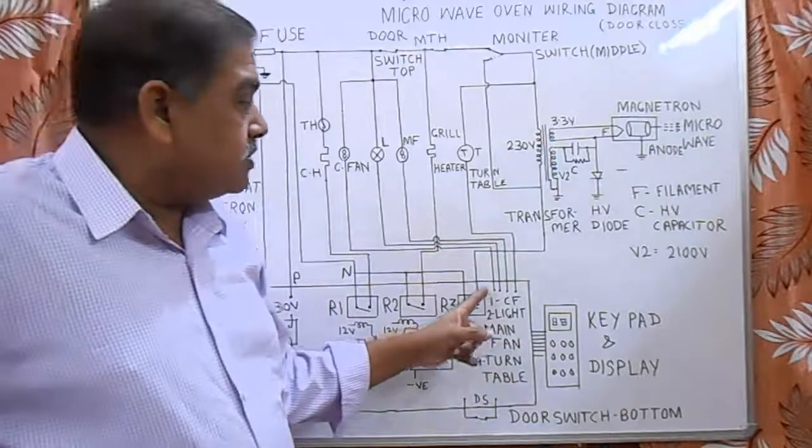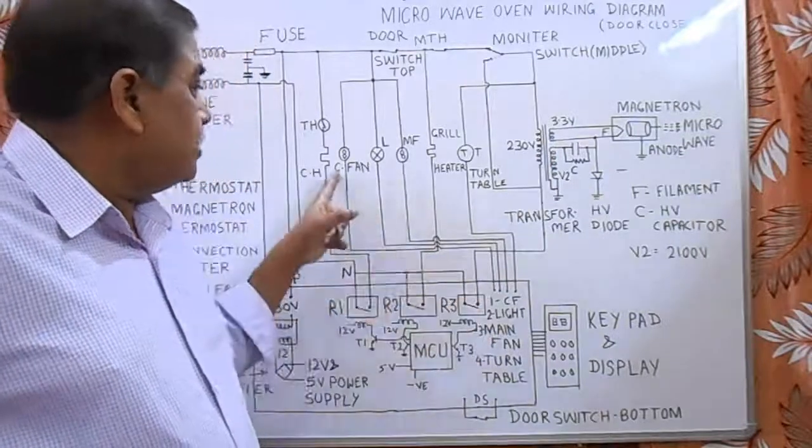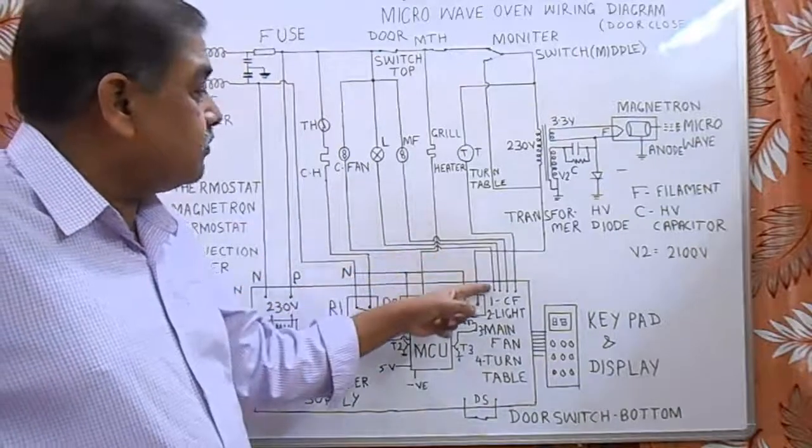There are four output channels from this PCB. The first one controls the convection cooling fan.